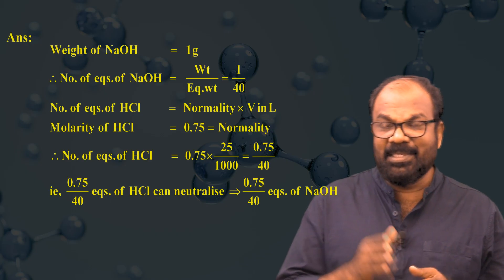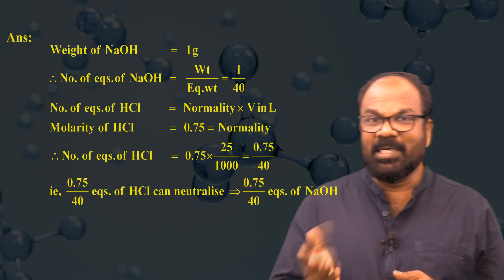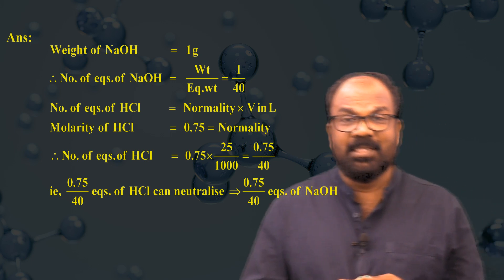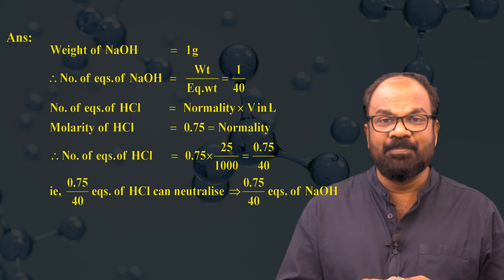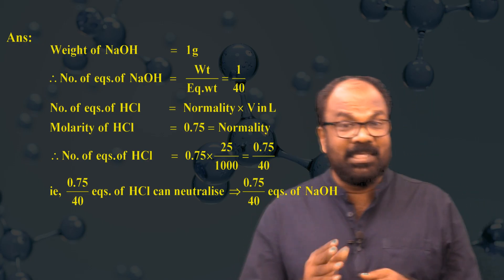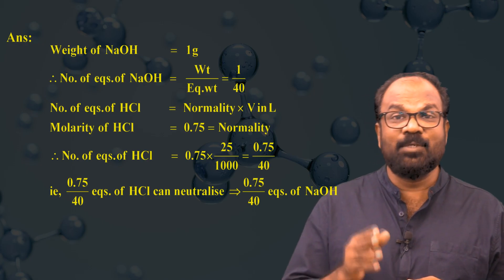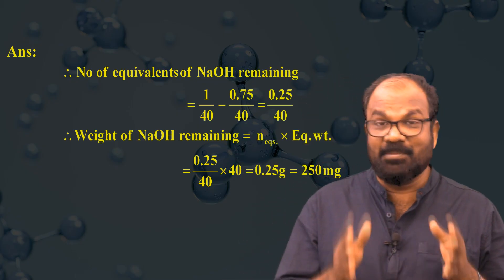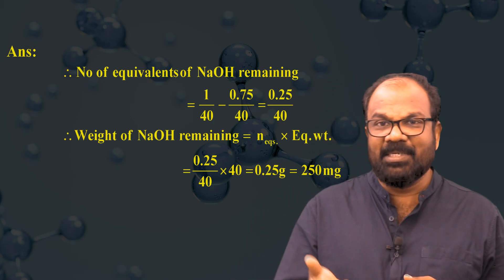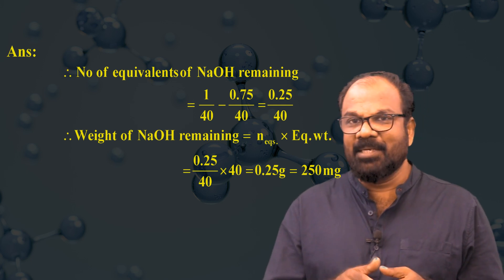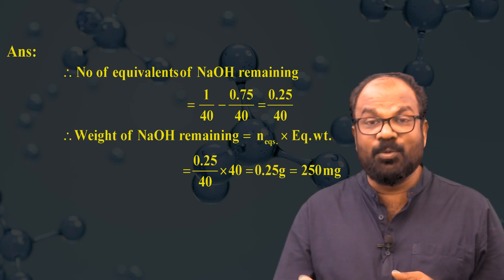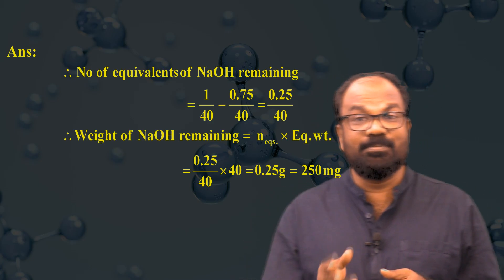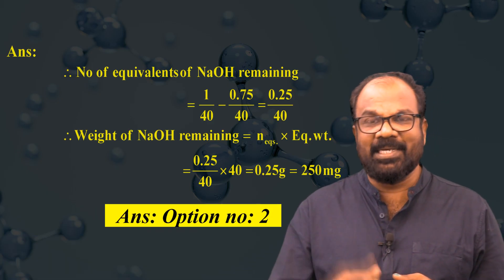The number of equivalents of HCl = normality × volume (L). Since n-factor of HCl = 1, normality equals molarity = 0.75. So equivalents of HCl = 0.75 × 25/1000 = 0.75/40. These equivalents of HCl neutralize 0.75/40 equivalents of NaOH. Remaining equivalents of NaOH = 1/40 − 0.75/40 = 0.25/40. Therefore, weight of NaOH remaining = (0.25/40) × 40 = 0.25 gram = 250 milligram. The answer is option number two.